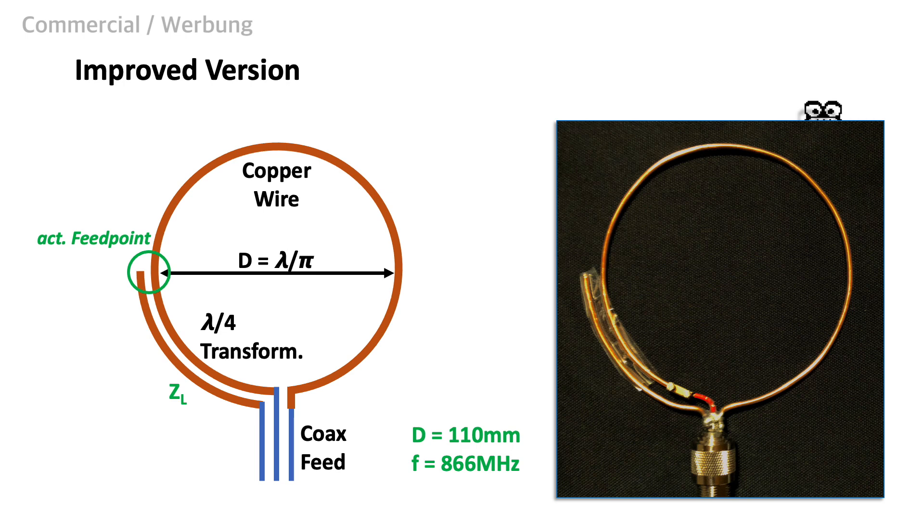This measure also moves the actual antenna feed point from the bottom to the left side. This allows us to receive the vertical polarization of the signal. We will see in the next episode that this is the secret also for another effect.